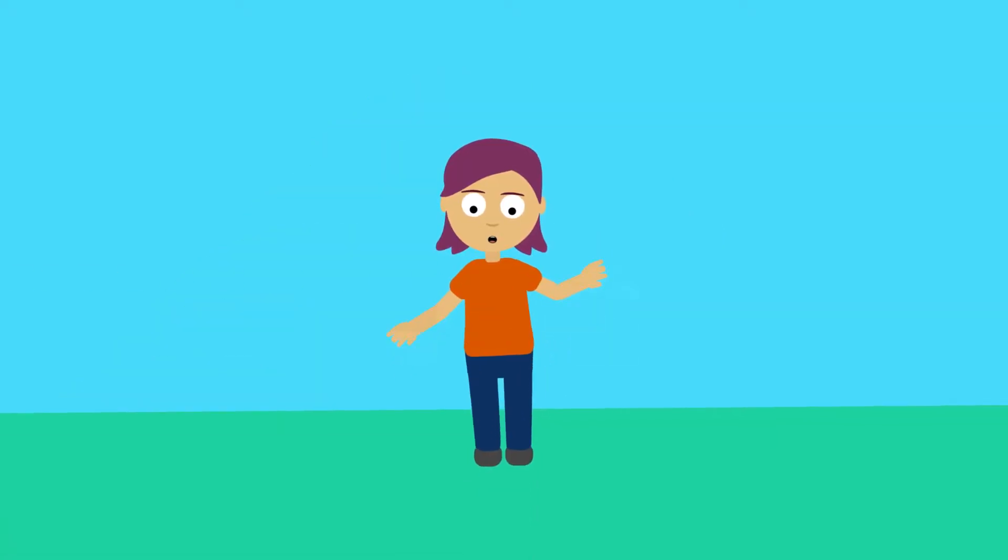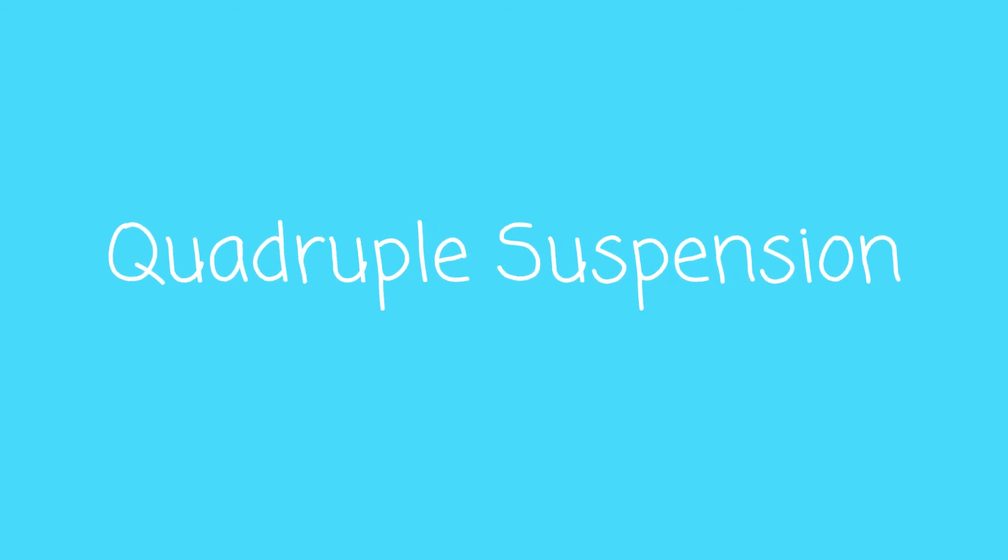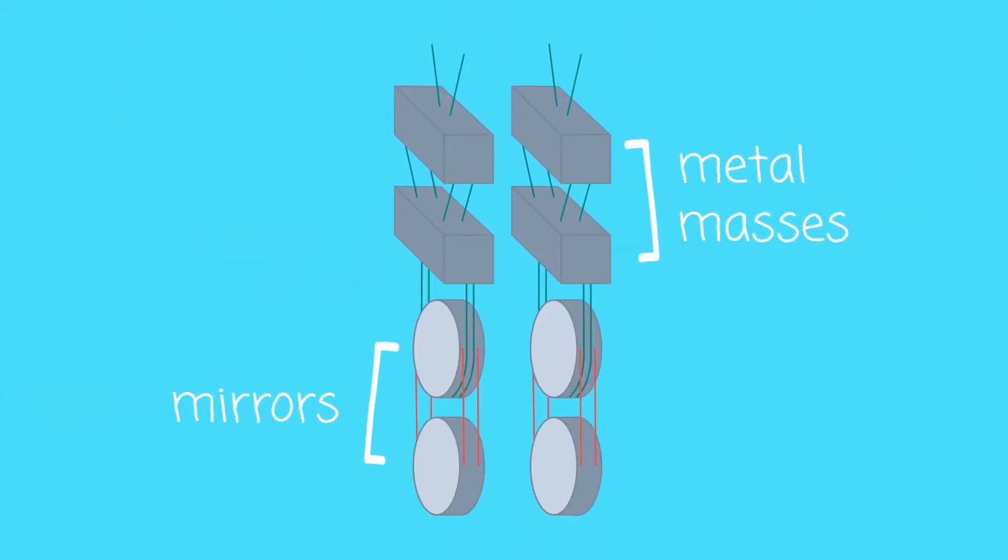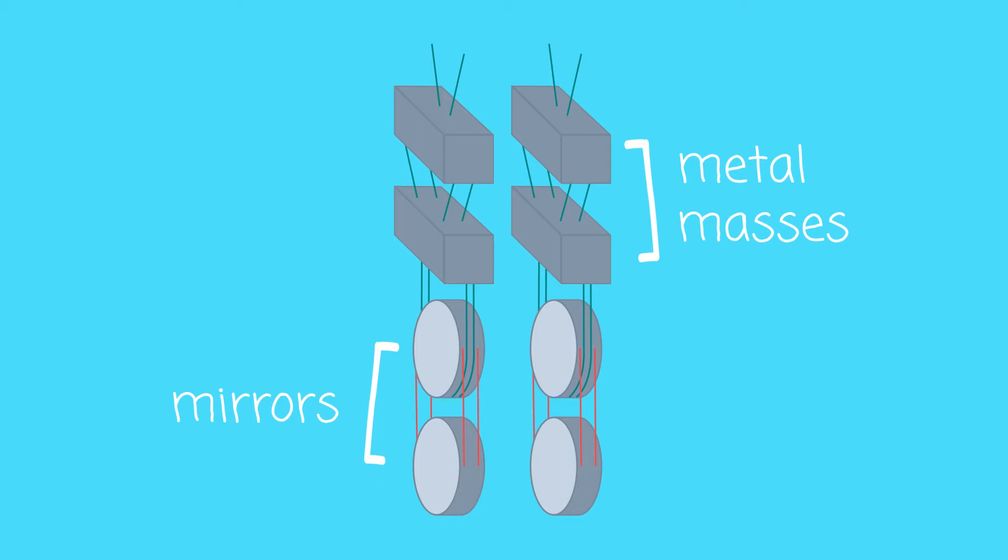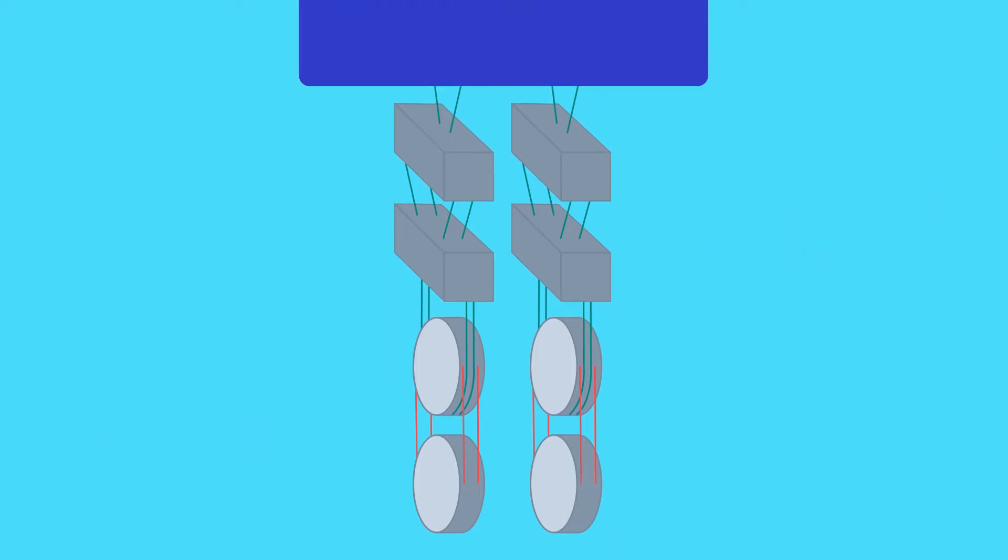One of the problems with detecting gravitational wave signals comes from seismic oscillations. To overcome this problem, the detectors use a quadruple suspension system for the mirrors, suspending them from four pendulums. This damps out high frequency motions above 10 Hertz.